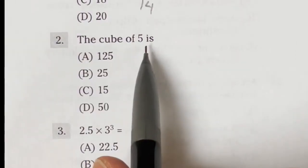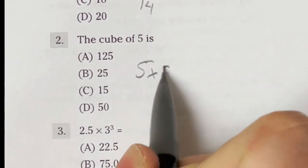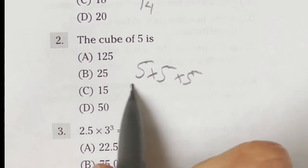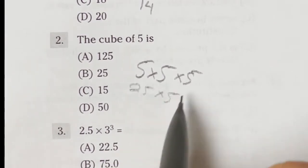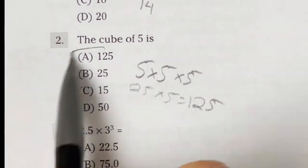The cube of 5 is what? So the cube of 5 just means that we're taking 5 times 5 times 5. So 5 times 5 is 25 times another 5 is going to give us 125, meaning the answer to number 2 for the ASVAB is A.